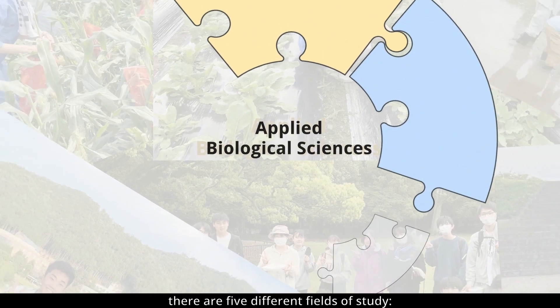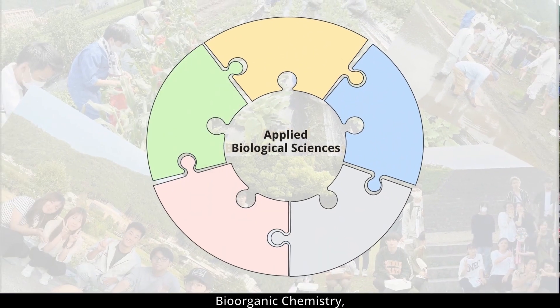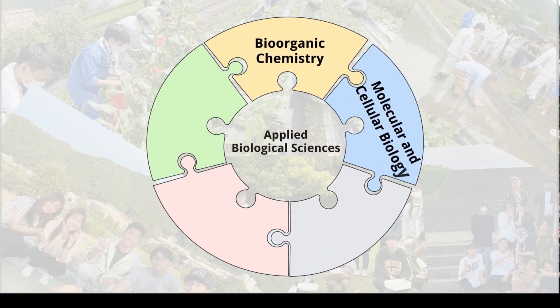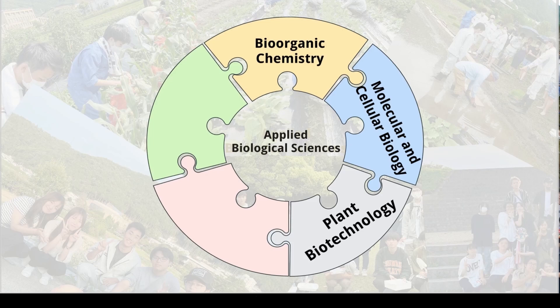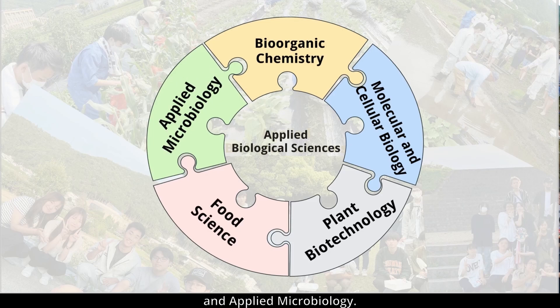Under the Department of Applied Biological Sciences, there are five different fields of study: Bioorganic Chemistry, Molecular and Cellular Biology, Plant Biotechnology, Food Science, and Applied Microbiology.